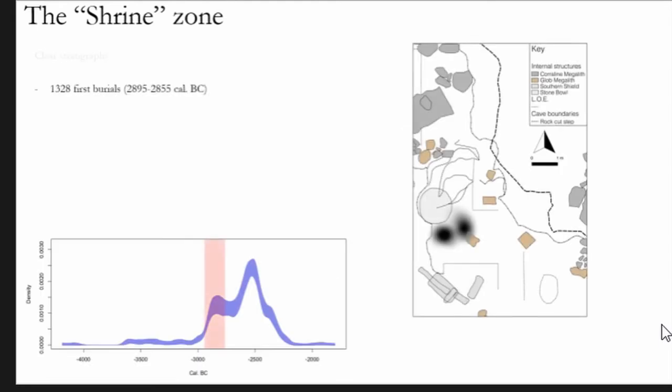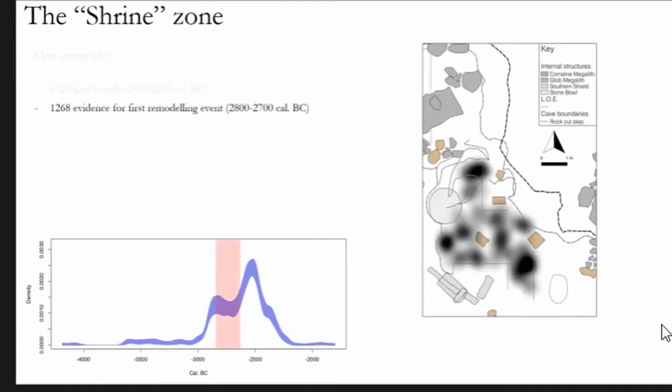So after the first placement of burials at around about 2800 BC on the bedrock, we then get expansion of burial activity across the bedrock, but we also have the evidence for the first remodeling event where we actually see that they're cutting into the burial deposit to lay a foundation for one of these megalithic structures.